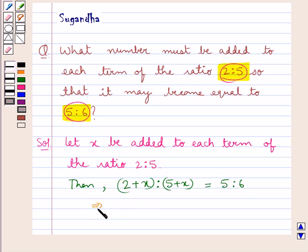This means we have (2 + x) upon (5 + x) equal to 5 upon 6. Now from this we need to find the value for x.